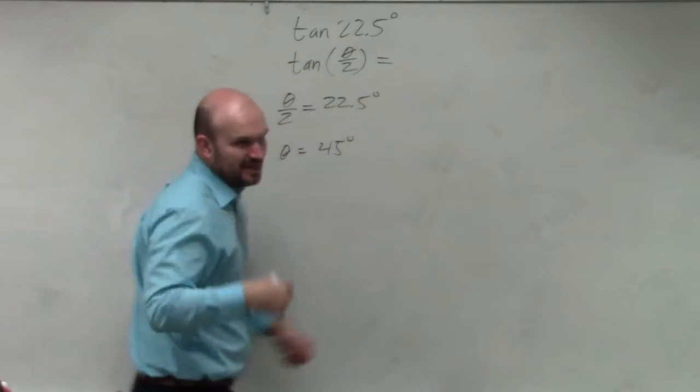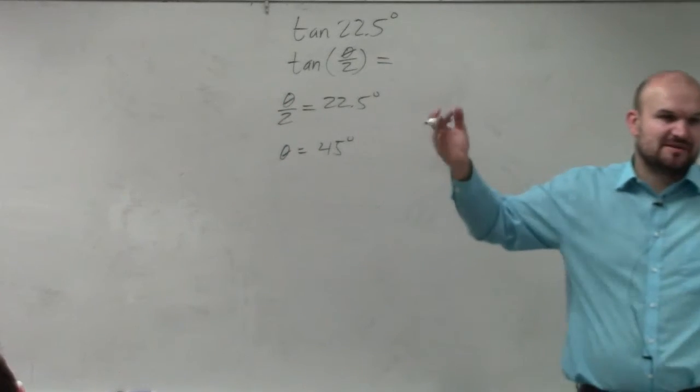45 degrees. How did I do that? You just multiplied by 2 on both sides. 22.5 times 2 is 45 degrees.